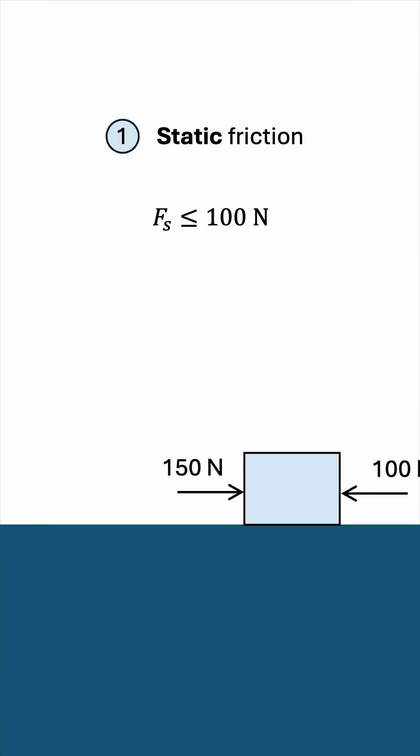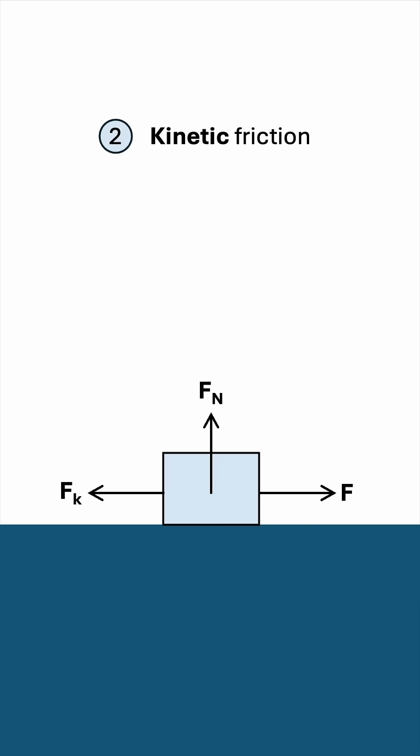Which takes us to the second type of friction: kinetic friction. This is when motion is currently in place. Fk is given by μk times Fn. Notice that this is an equation, not an inequality, so it's a fixed value. Also, this is no fundamental physics law — it's just something experimental, or empirical, if you will.